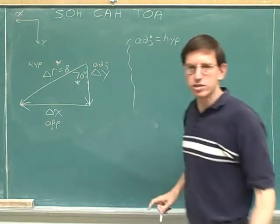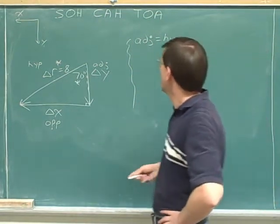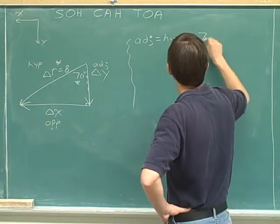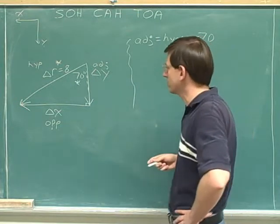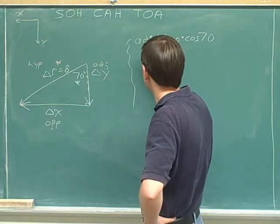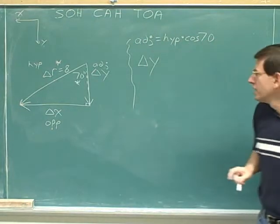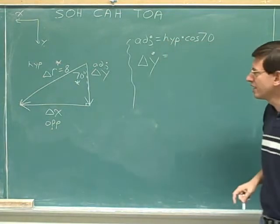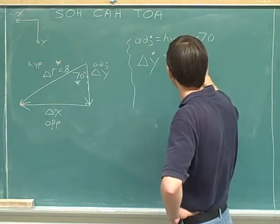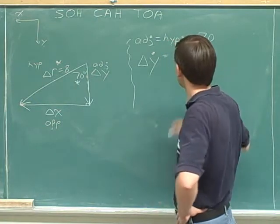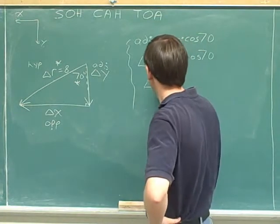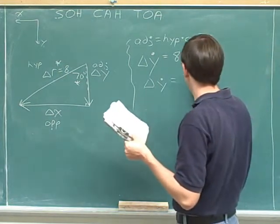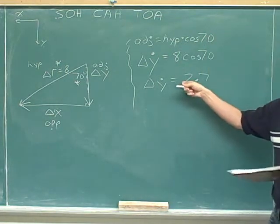To find the adjacent side, we'll use the hypotenuse. Should we use sine or cosine? The adjacent side is related to the cosine. We're focusing on the 70-degree angle. Now we need the length of the adjacent side—it's delta y with a dot, just the magnitude of that side. The hypotenuse is 8, so that's 8 times cosine 70. Since we're still dealing with the magnitude, 8 times cosine 70 is 2.7. This is a magnitude, so I'm not going to indicate a sign.